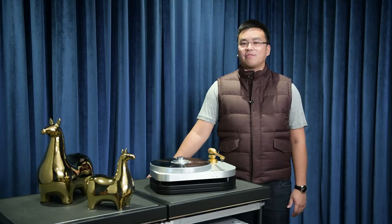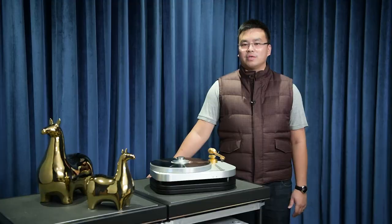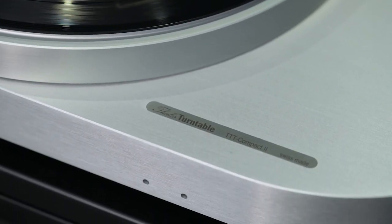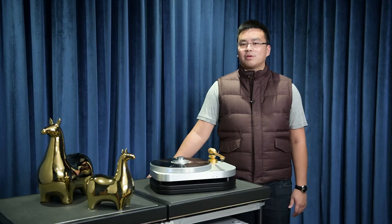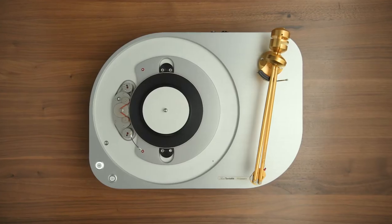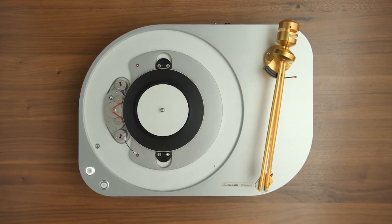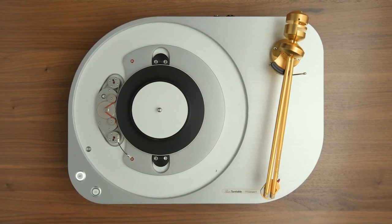The turntable we have here is the Compact Mark II. It looks very simple, but it has over 170 parts inside. The drive system of the turntable is underneath the platter and is powered by batteries, which ensures the cleanest source of power.